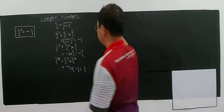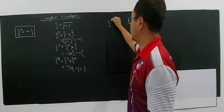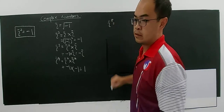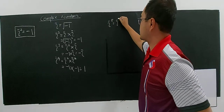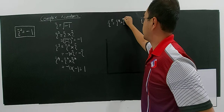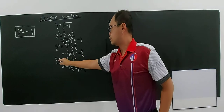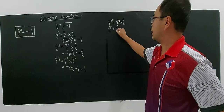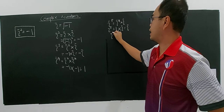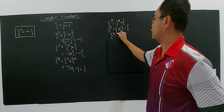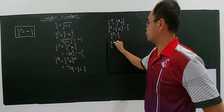Then I move on to i to the power five. I'm listing these out so you understand how to work with i. i power five is i power four multiplied with i. i power four we just found to be one, and one multiplied with i gives back i. So i power five equals i.